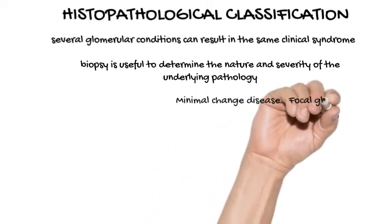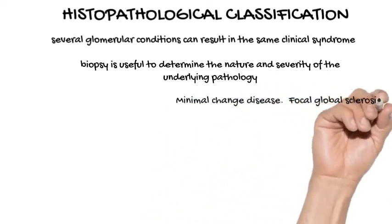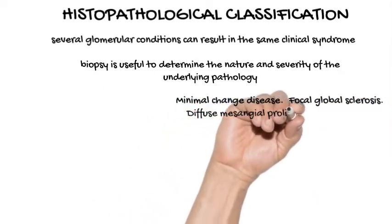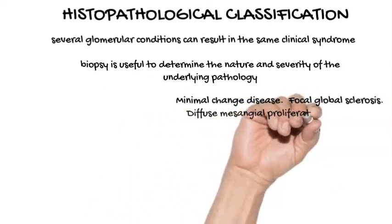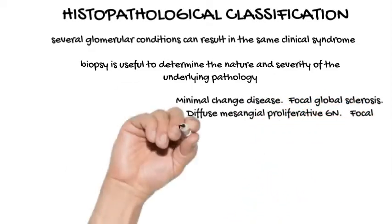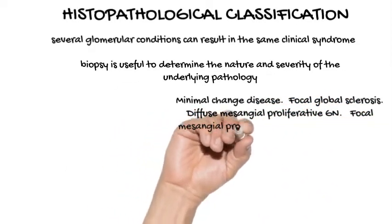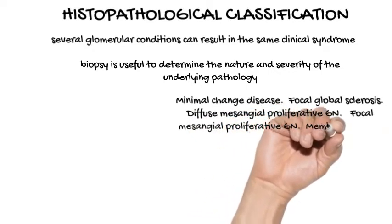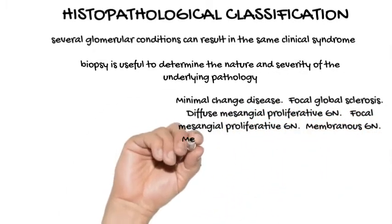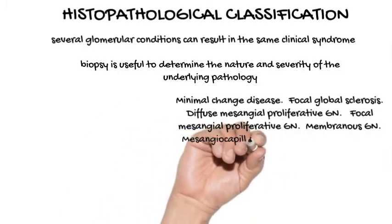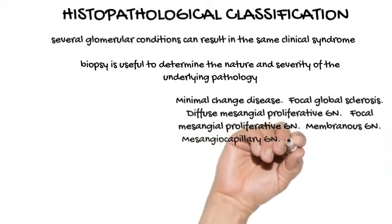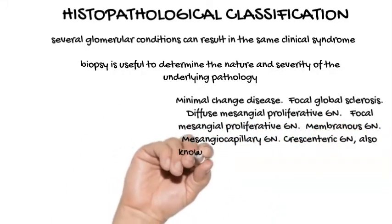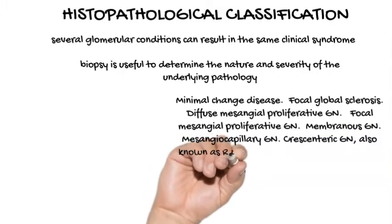The histopathological types include: minimal change disease; focal global sclerosis; diffuse mesangial proliferative GN; focal mesangial proliferative GN; membranous GN; mesangiocapillary GN; crescenteric GN, also known as rapidly progressive GN; focal and segmental glomerulosclerosis; and diffuse sclerosing GN.